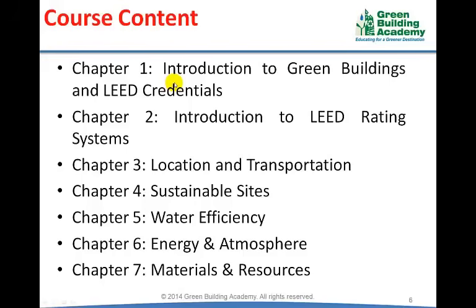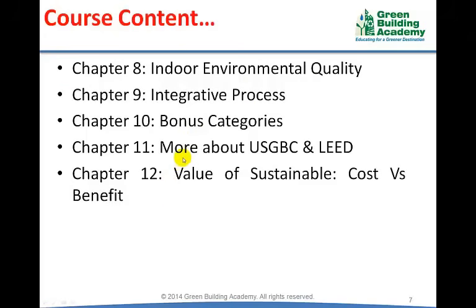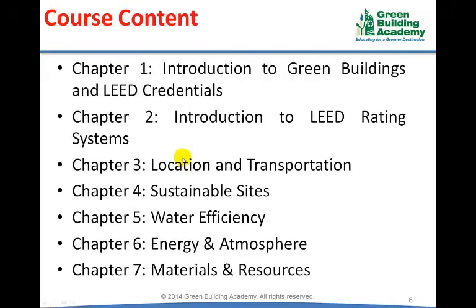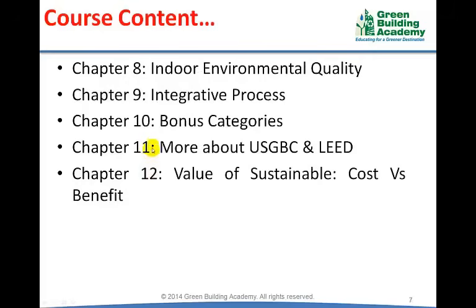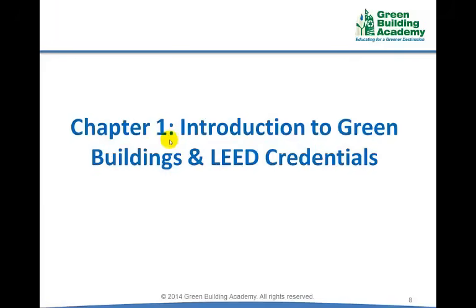The course content is divided into 12 chapters. In Chapter 1, we will discuss about Green Buildings and LEED Credentials. In Chapters 2 and 11, we will discuss about LEED Rating Systems and US Green Building Council. From Chapter 3 to Chapter 10, we will discuss about various LEED Credit Categories. Finally, in Chapter 12, we will discuss about Cost vs Benefit of Green Buildings.